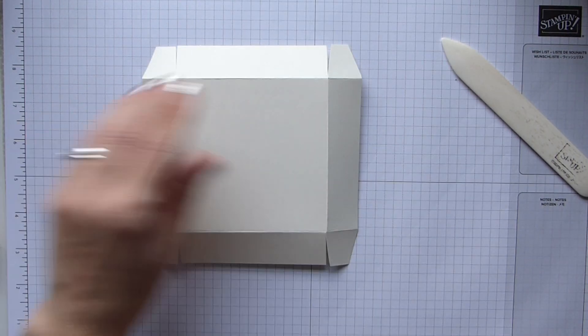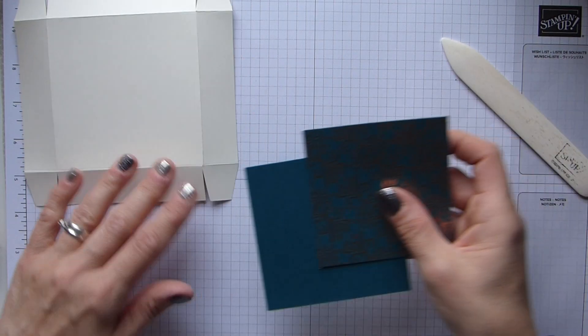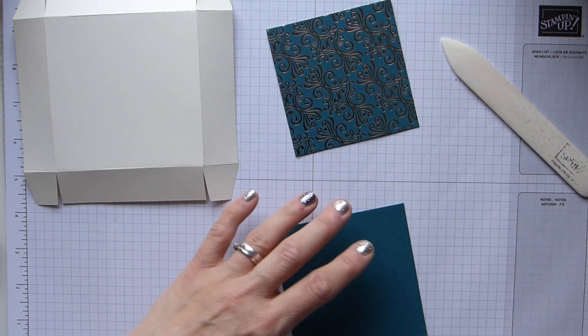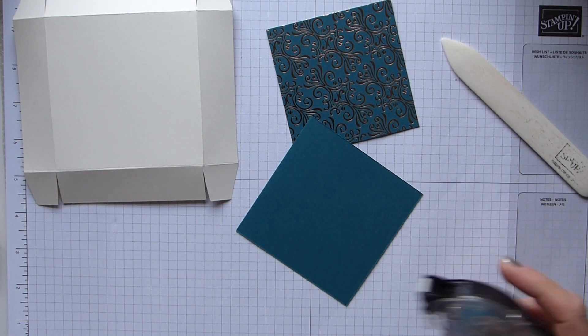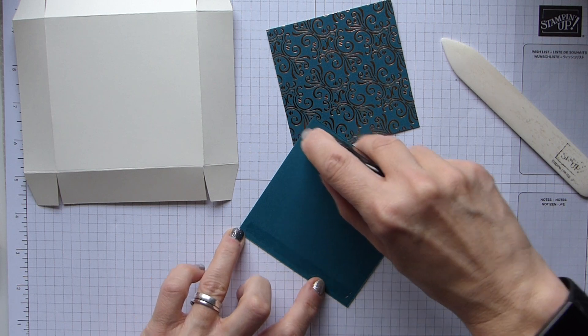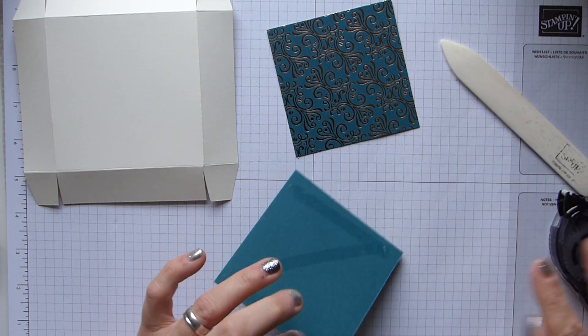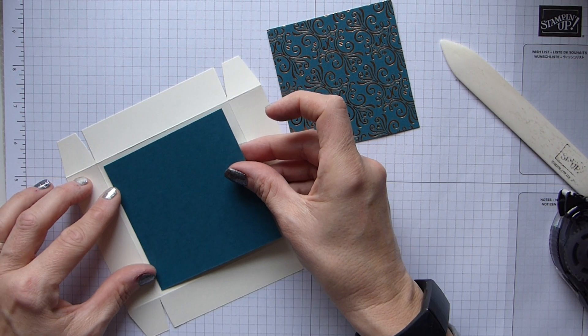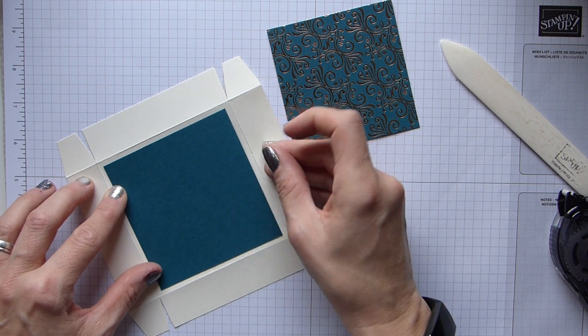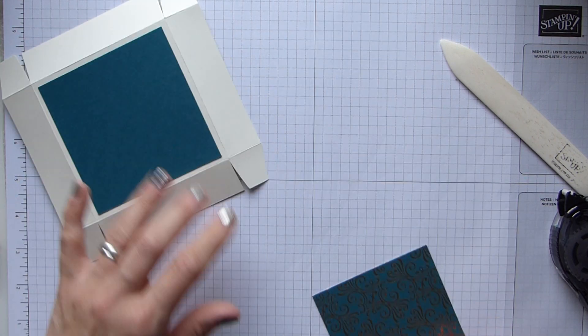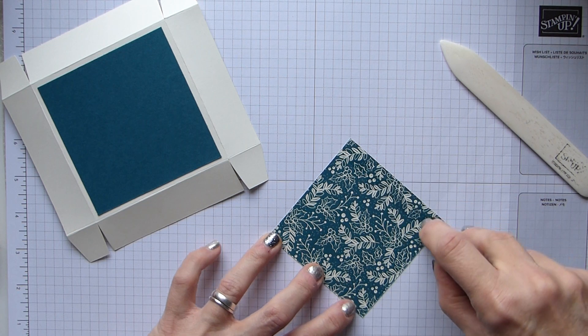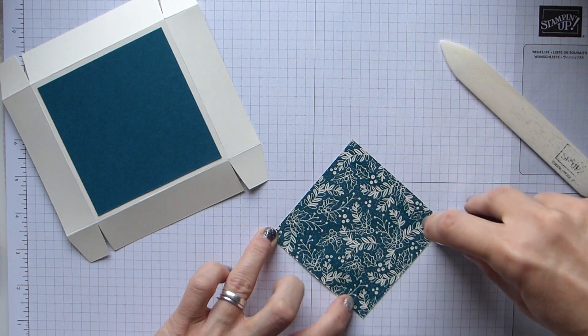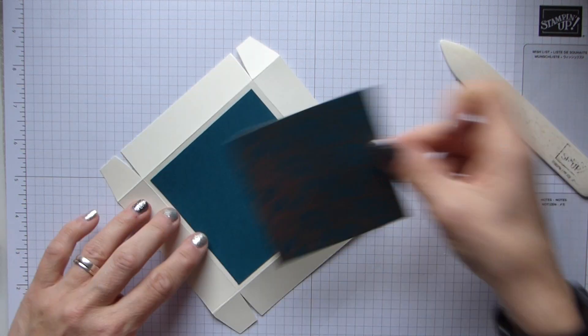So again, fold and burnish those four lines. And then we're just going to do the corners the traditional way. You don't need to switch these around because there's no difference in the thickness or the size of them.